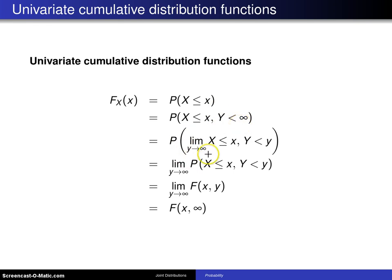This will be the limit as y goes to infinity that Y is less than or equal to y, or this limiting probability right here. This is the joint cumulative distribution function, so it can be written in this fashion. So essentially, if you put an infinity out here as your y value, that will come back and give you the cumulative distribution function of x alone.